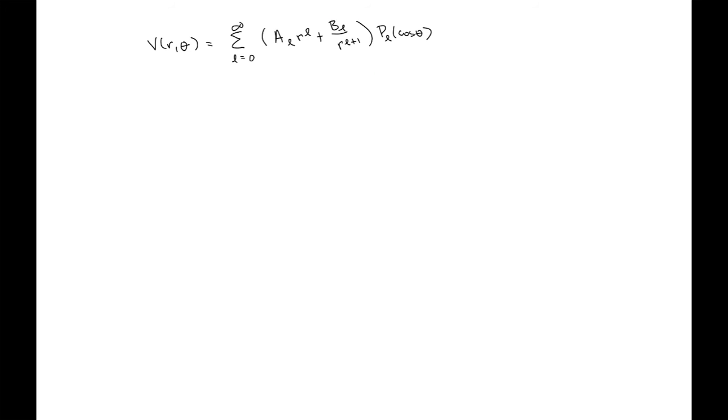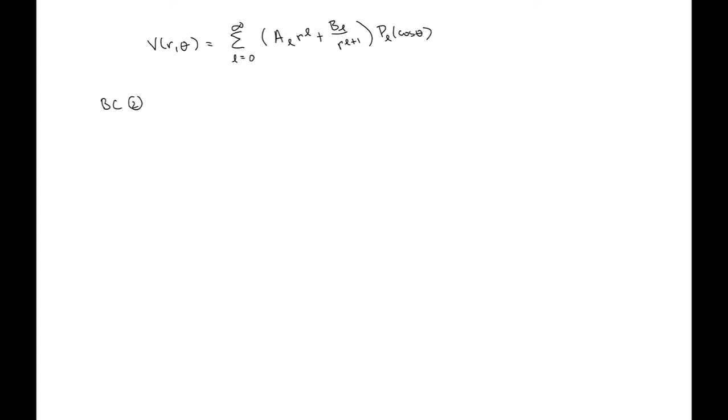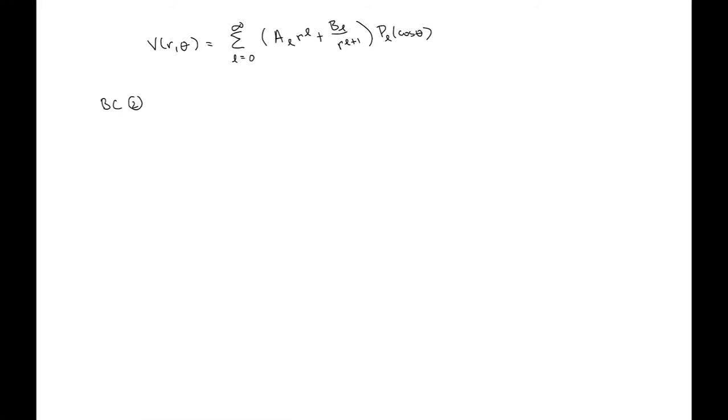Similar technique, it's going to be just a little bit different. So we've got our general solution. I know that boundary condition two, this one that says that the potential should go to zero when R goes to infinity, tells me that this first term has to go to zero, or this particular constant has to be zero, or else this term would blow up. So that tells me that A sub L equals zero, or this term would blow up at R goes to infinity.